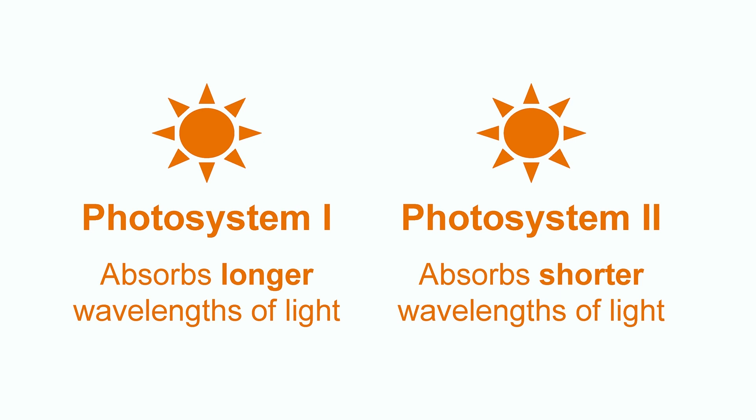Photosystem 1 tends to absorb longer wavelengths of light, and photosystem 2 absorbs shorter wavelengths of light.